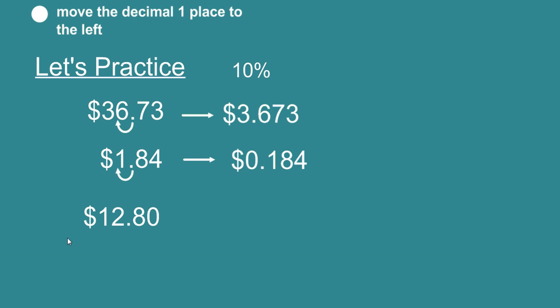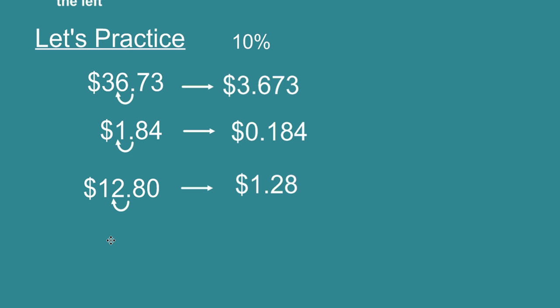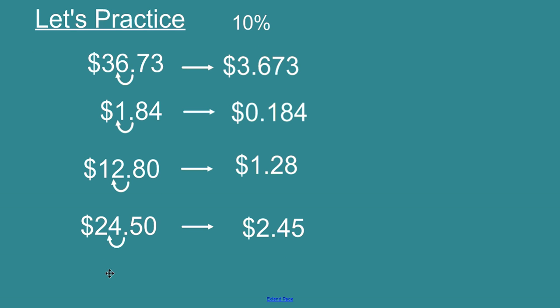What's 10% of $12.80? Yes, $1.28. We just dropped the zero rounding to the hundredths place or the nearest cent. What's 10% of $24.50? $2.45. You can see all we're doing is moving the decimal one place to the left and then rewriting the value.